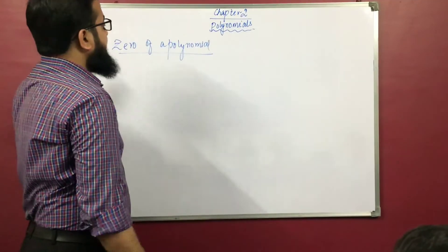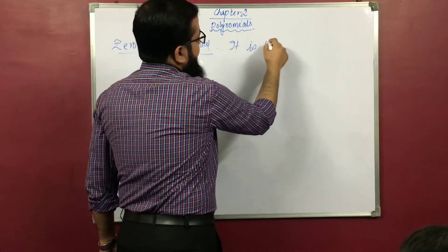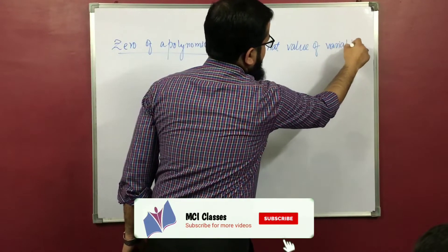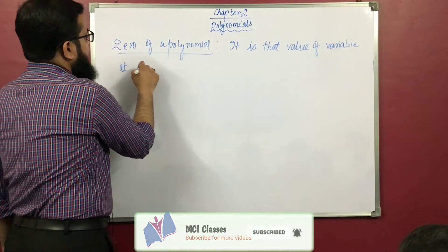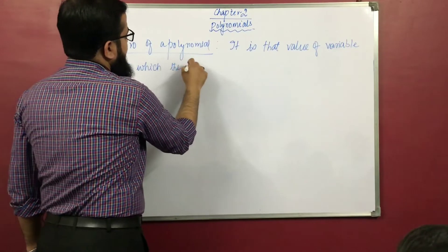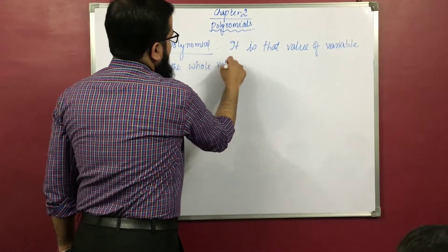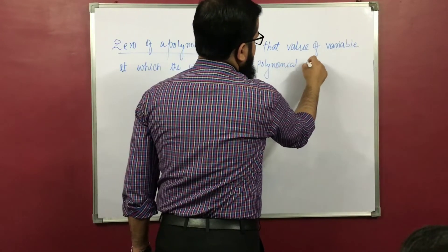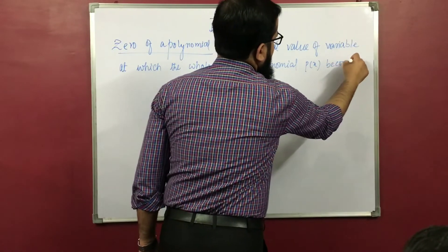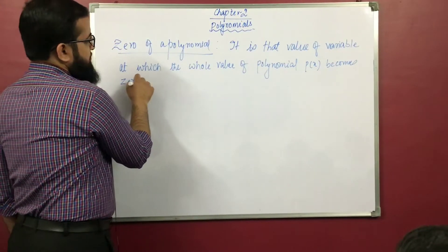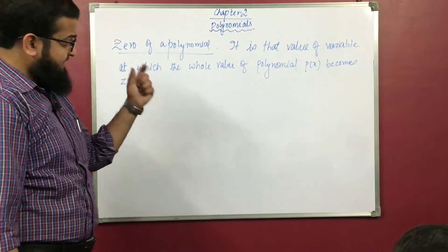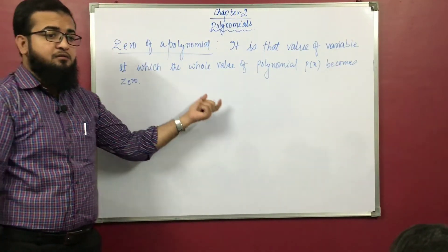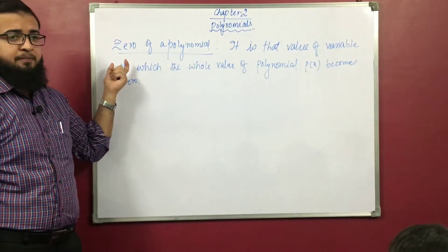The zero of a polynomial is that value of the variable at which the whole value of the polynomial px becomes 0. In other words, the value of x at which the polynomial becomes 0 is called the zero of the polynomial.